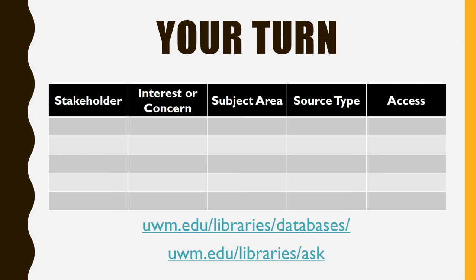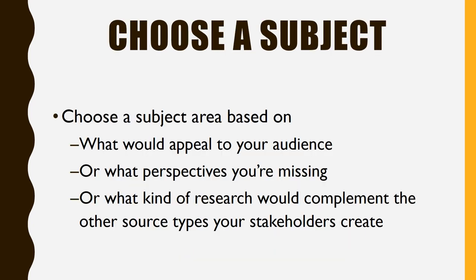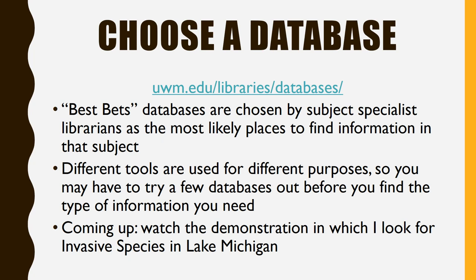Next up, we'll use the work you did thinking of stakeholders and their concerns to develop a strategy for finding scholarly research related to the problem you're focusing on. Best Bets databases are chosen by subject specialist librarians as the most likely places to find information in that subject. Different tools are used for different purposes, so you may have to try a few databases out before you find the type of information you need.